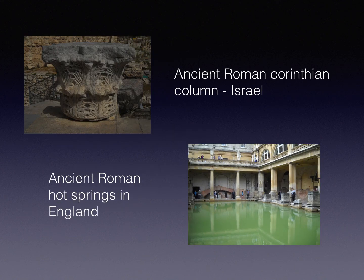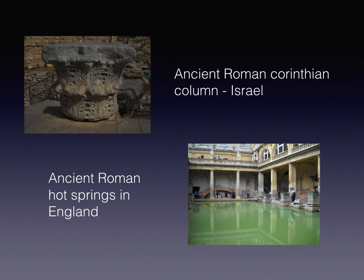Here are some pictures showing evidence of Roman colonization in other parts of the Mediterranean. In the upper left-hand corner is an ancient Roman column done in the Corinthian style, which I took a picture of in Israel. On the bottom right-hand side is a picture of an ancient Roman hot spring in England, where Romans would go to treat problems like arthritis and indigestion. If there are Roman ruins in England and Israel, obviously the Romans had to get there somehow — they were clearly a colonizing power.